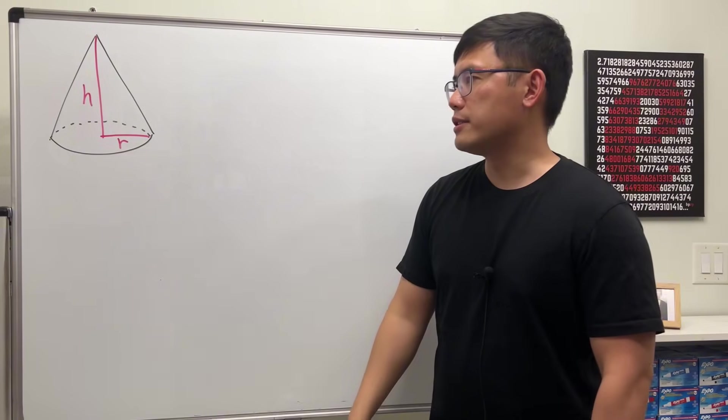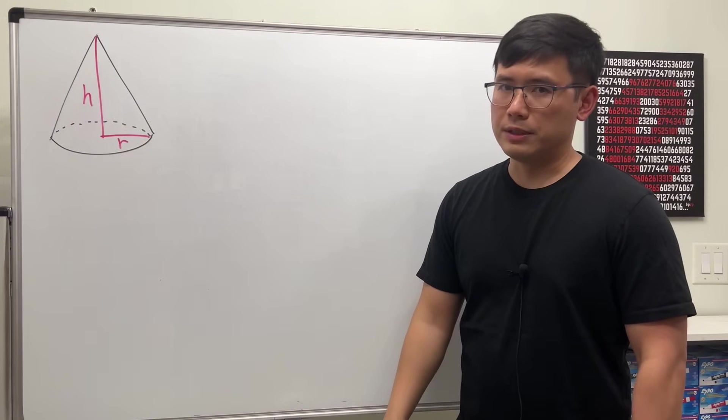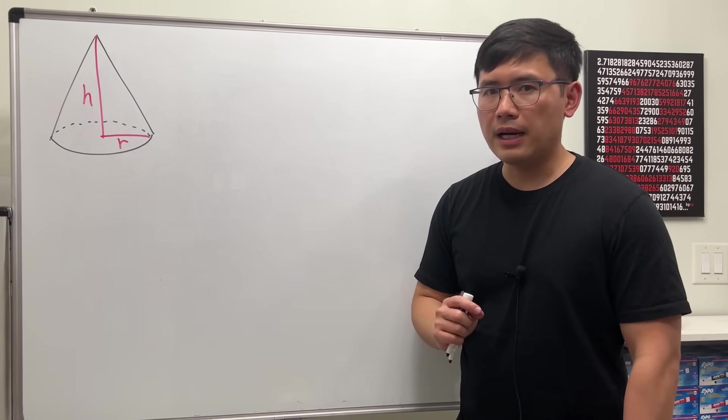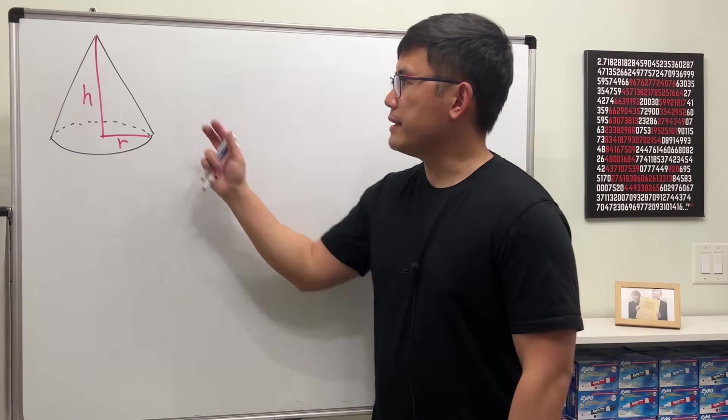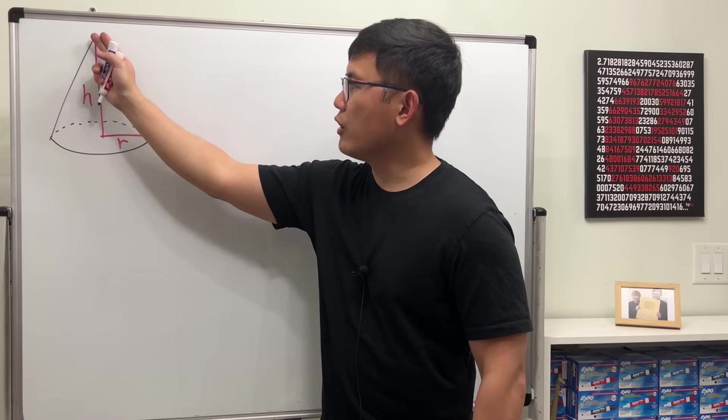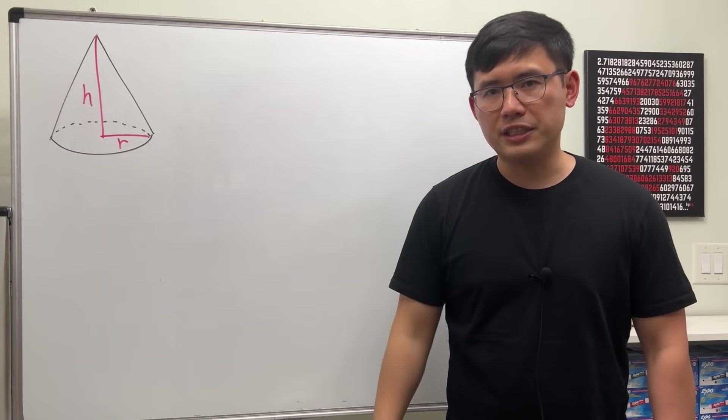We know the base of a cone is just a circle. The area for that is just pi r squared. So now let me ask you, suppose I take a cone and I'm going to cut it off and open it. What kind of shape do we see?